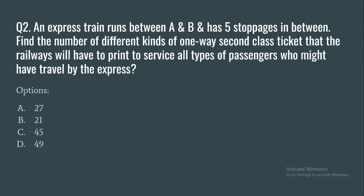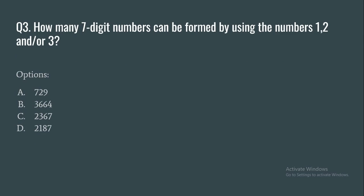Question 2: An express train runs between stations A and B and has five stopovers in between. Find the number of different kinds of one-way second-class tickets the railway will have to print to serve all types of passengers who might travel by the express. Options: 27, 21, 45, or 49.